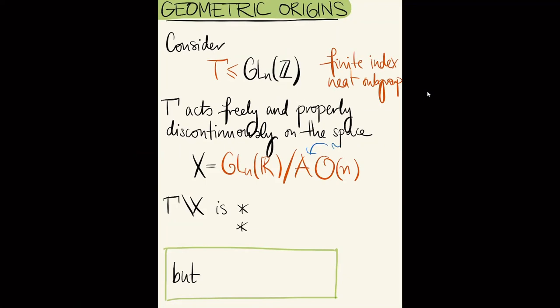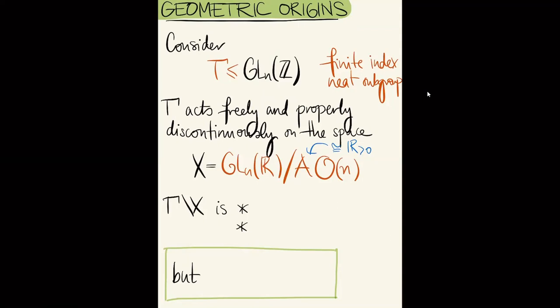I'm using the general linear group rather than the special linear group because I ultimately want to return to the story of algebraic K-theory and make the final comparison more immediate. This space X has a natural smooth manifold structure — in fact it's diffeomorphic to Euclidean space, so it's contractible. When I mod out by the action of gamma I get a smooth manifold, and moreover a model for the classifying space of gamma. This allows me to study the discrete group gamma using geometric tools.